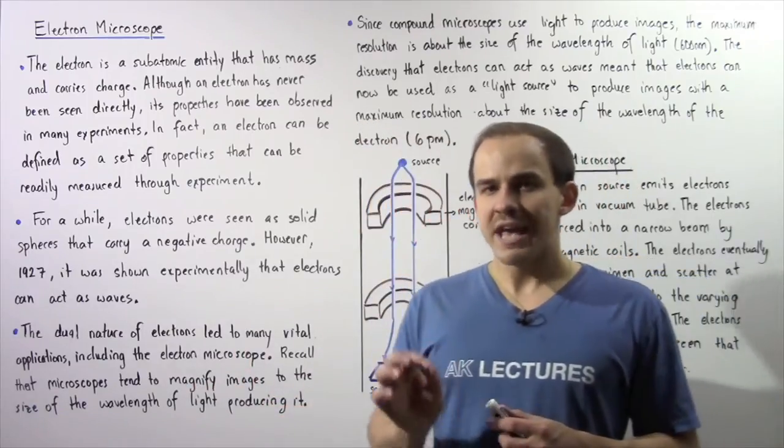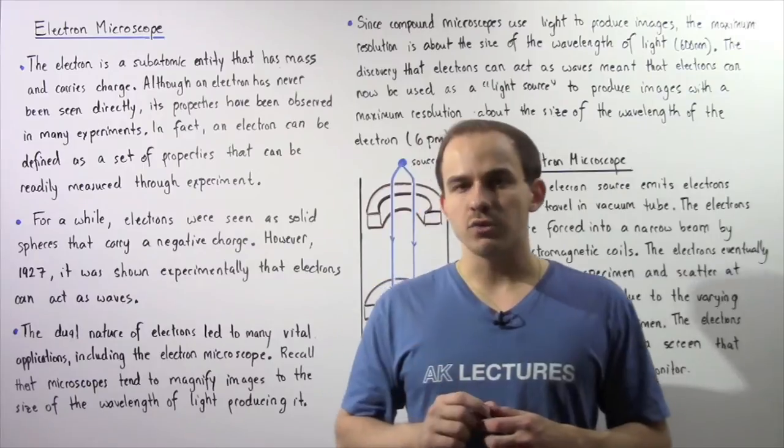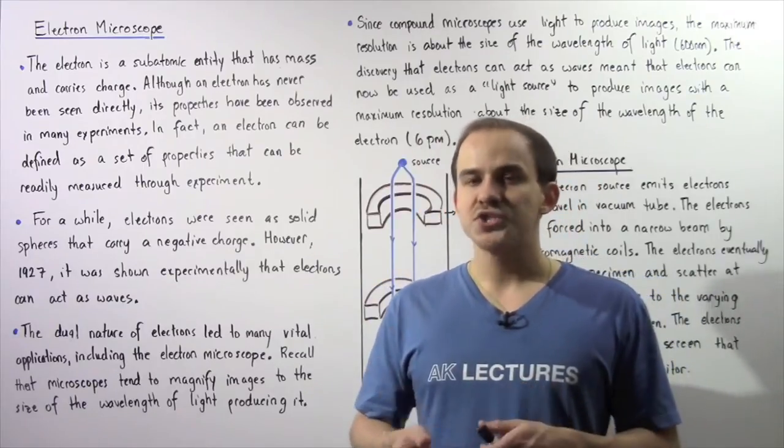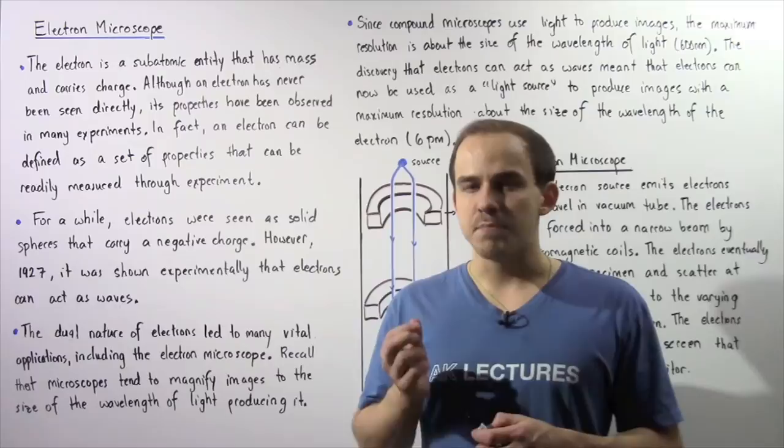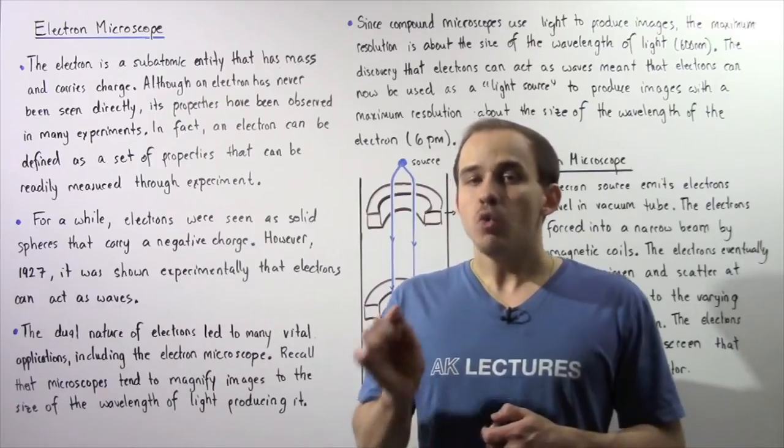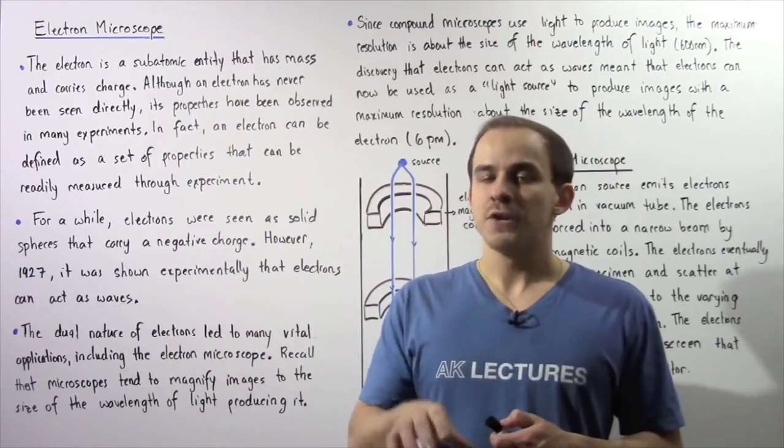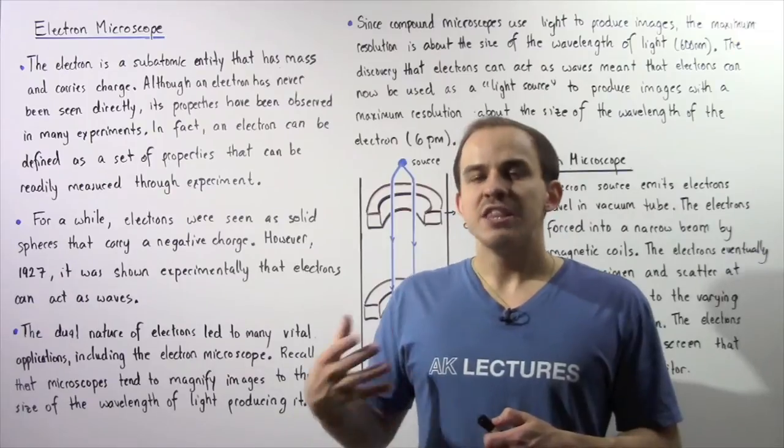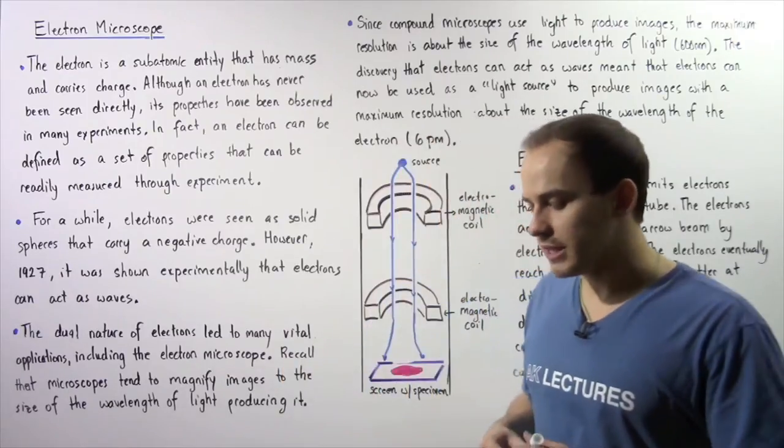Now although electrons have never actually been seen directly, the properties of electrons have been observed experimentally. In fact, we can define electrons using the properties that have been observed experimentally.